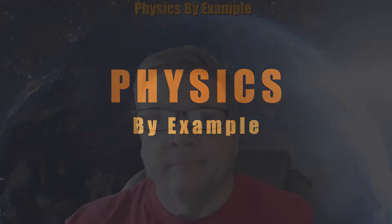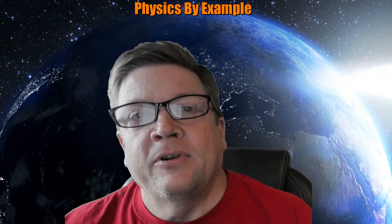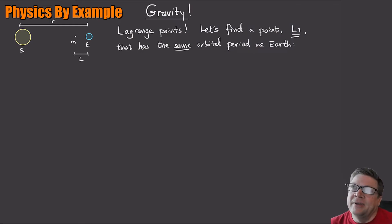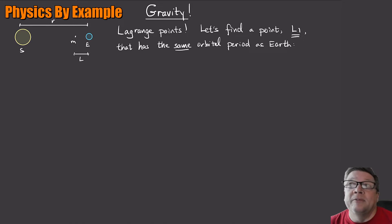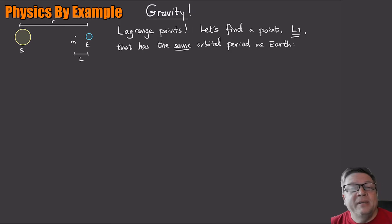One more cool thing we can do with Newton's gravitational laws is try to find what are called Lagrange points — where, if I put a mass little m, is there a point I could put it so that it would stay at the same position relative to the Earth as it goes around the Sun? In other words, is there a point inside Earth's orbit that would have the same period as Earth, so it would stay in the same position?